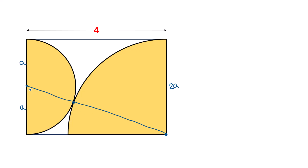Now the radius of this small circle is a, so from this point to this point is a. And the distance between this point and the centre of the large circle is the same as the radius of that circle, which is 2a. So this distance is 2a.